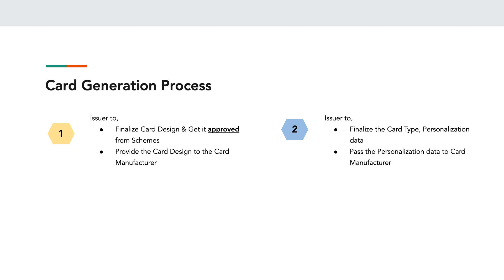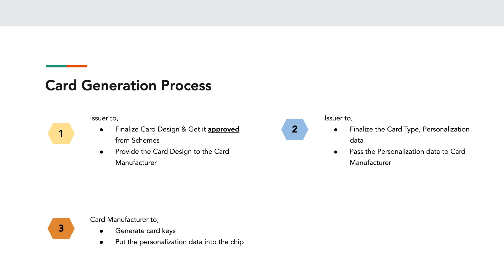Apart from that, the issuer also has to finalize the card type — whether it is a contact card, a contactless card, or a dual interface card. The issuer also has to finalize the personalization data. On an ongoing basis, the issuer and card manufacturer have day-to-day file exchanges for the cards to be printed. The card manufacturer also has to generate the card keys — there is a key ceremony between the issuer, the scheme, and the card manufacturer. These two processes — file exchanges and key generation — do not necessarily have a certification process involved.